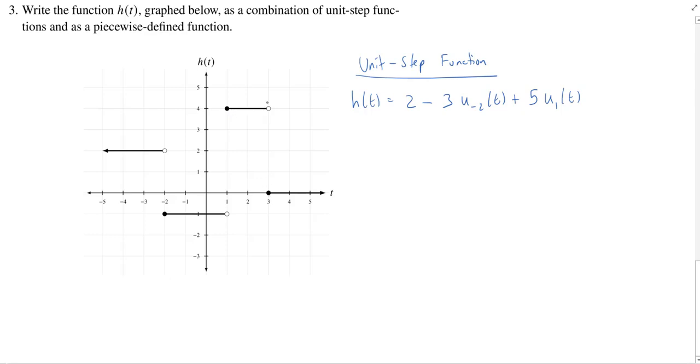When t equals 3 it's going to go down, so we're going to do a minus, and we'll do a u3 of t. And it goes from 4 down to 0, so we went down by 4. There we go, we've got a unit step function for this.